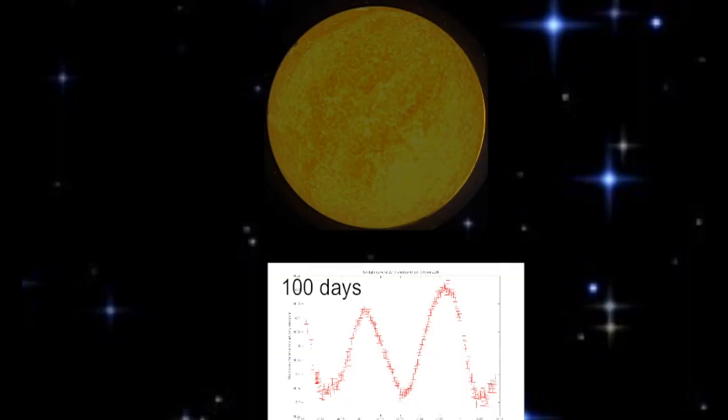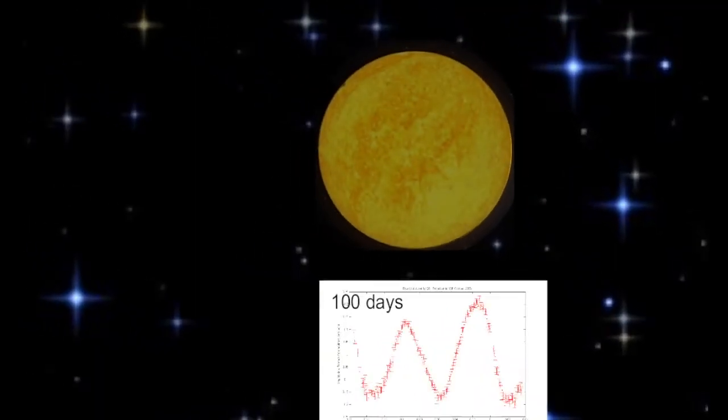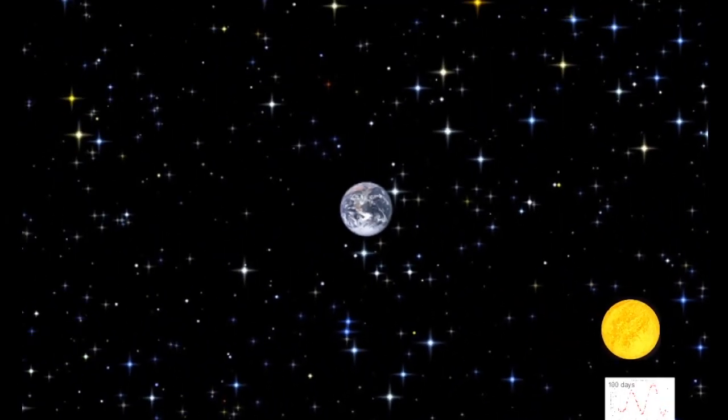For example, if a Cepheid has a long period but appears very dim from Earth, then it must be very far away since a long period implies a bright star.